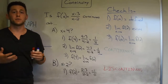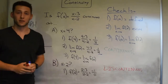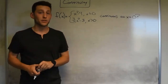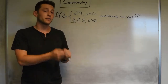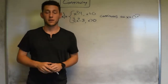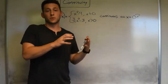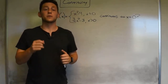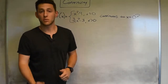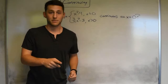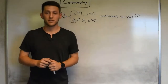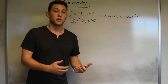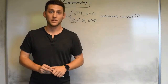Now let's bump up to a piecewise function. Before we get there, I do want to make an additional comment. If you're ever dealing with a polynomial function, it turns out you're going to be continuous everywhere — there are no problem points. If you're dealing with a rational function — meaning a polynomial divided by a polynomial — you'll only be discontinuous when the bottom equals zero. Those are going to be your problem points: your vertical asymptotes or your removable discontinuities where there's a hole in the graph. Everywhere else you'll be continuous.